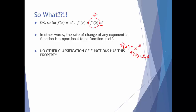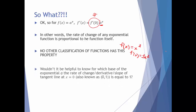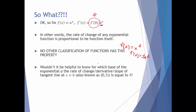Keeping that in mind, what we'd really like to figure out is: for which base of the exponential is the rate of change — the derivative, the slope of the tangent line — at x equals 0, which means at the point (0,1), going to be equal to 1? What base can we use to make that happen? Remember, we're working with a very general base and haven't said what it is yet.